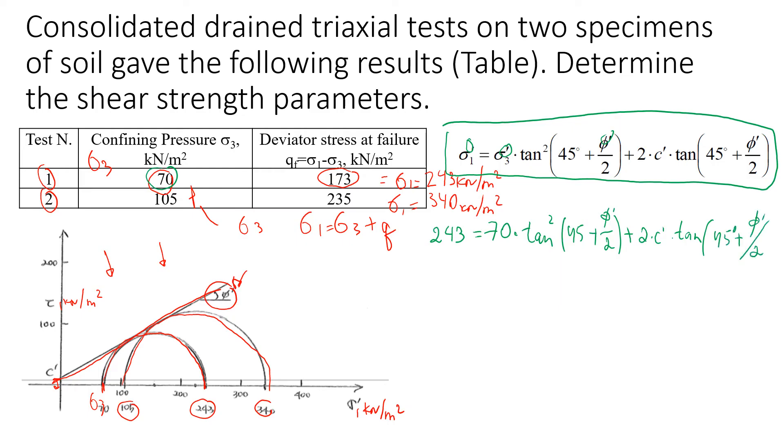We'll do the same thing for the second test. In this case, the principal stress at failure will be 340, and sigma 3 is 105. The rest is the same as in the first test. We have two equations and we have two unknowns, so we can easily solve this one.